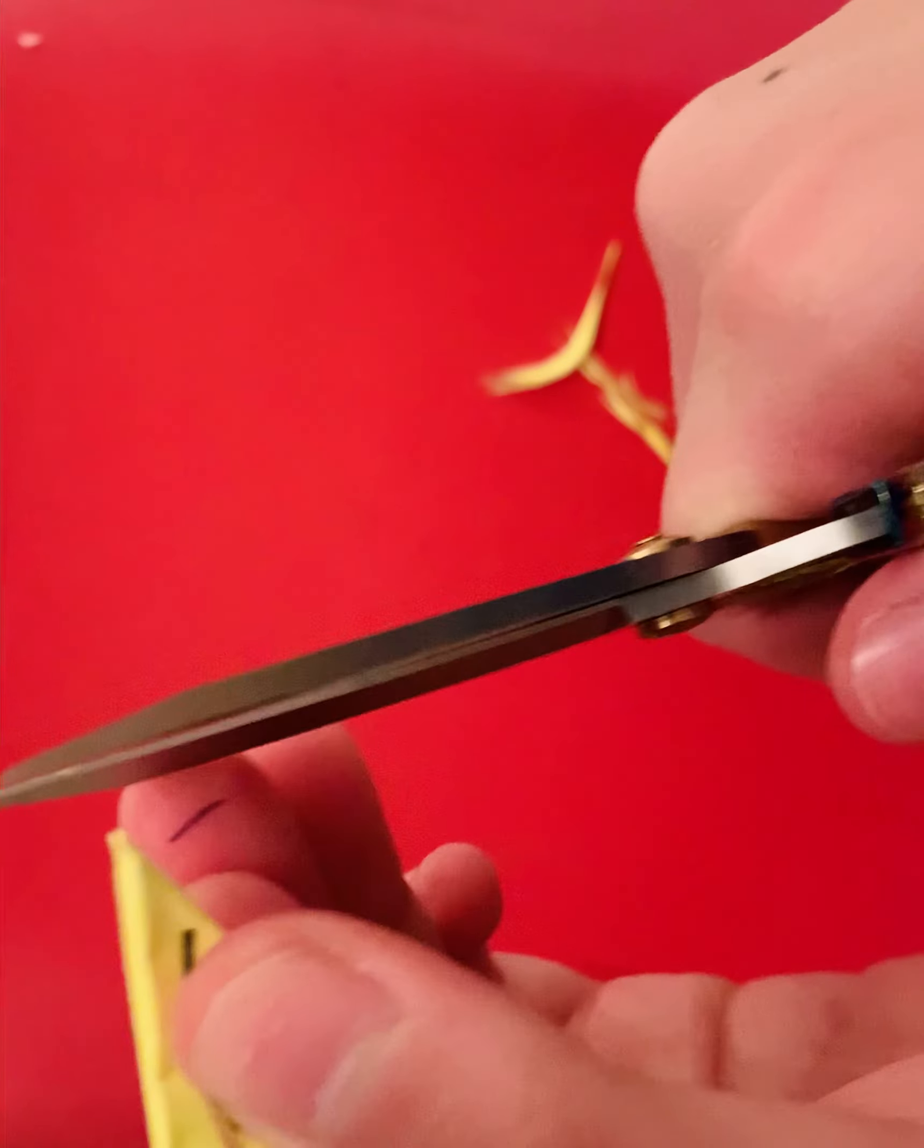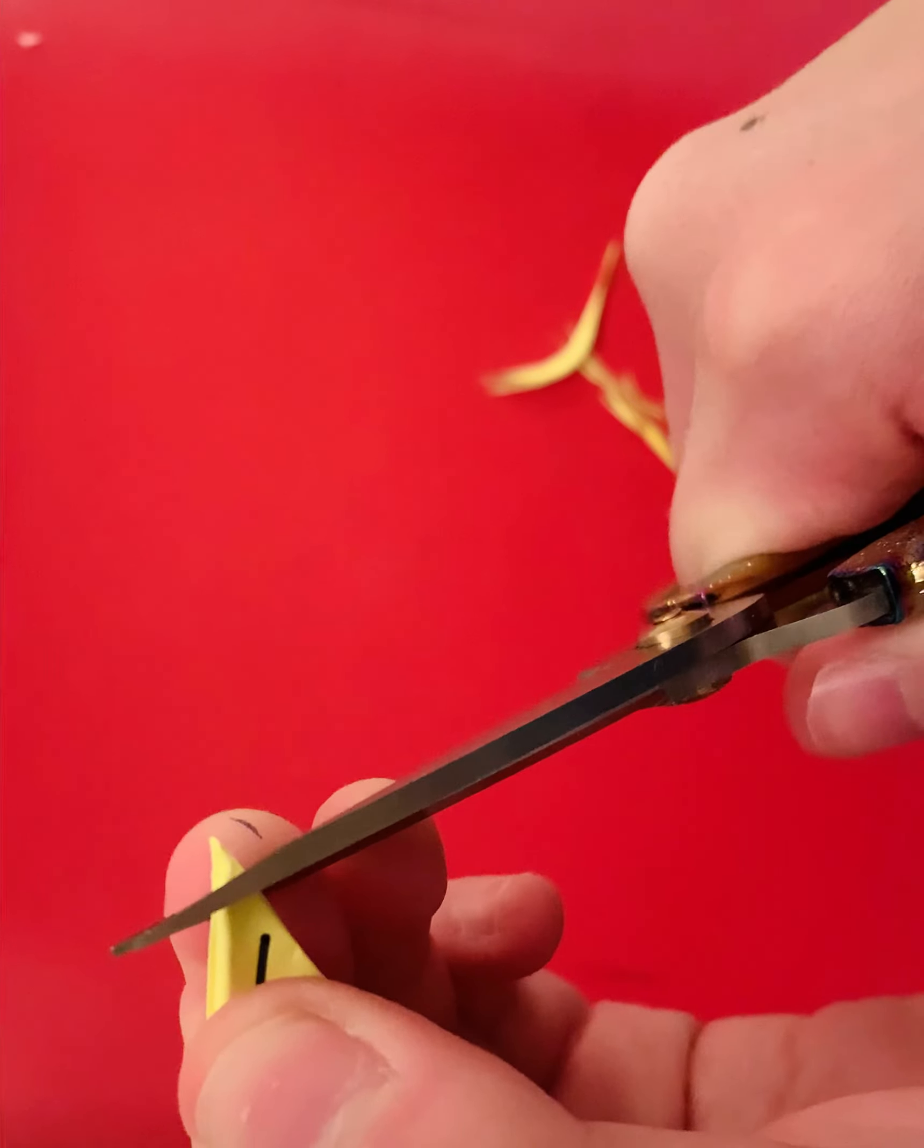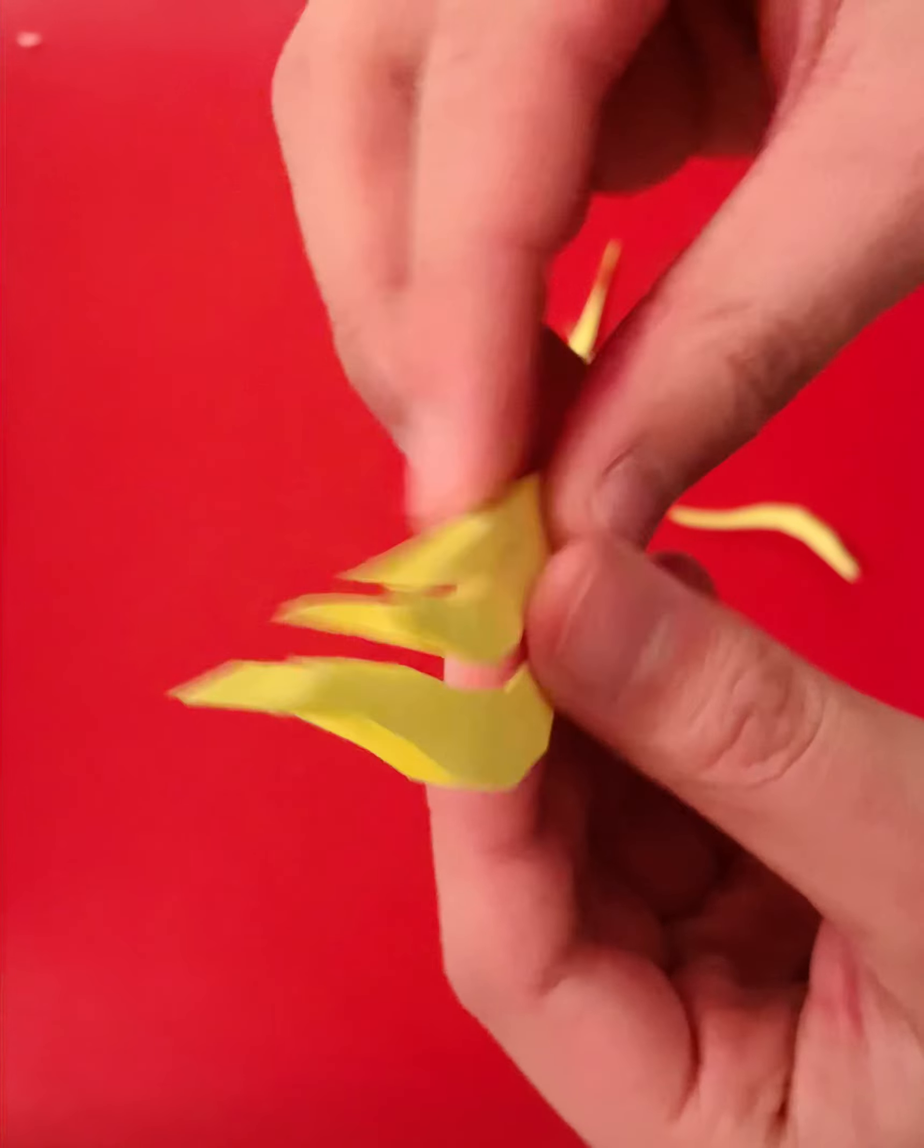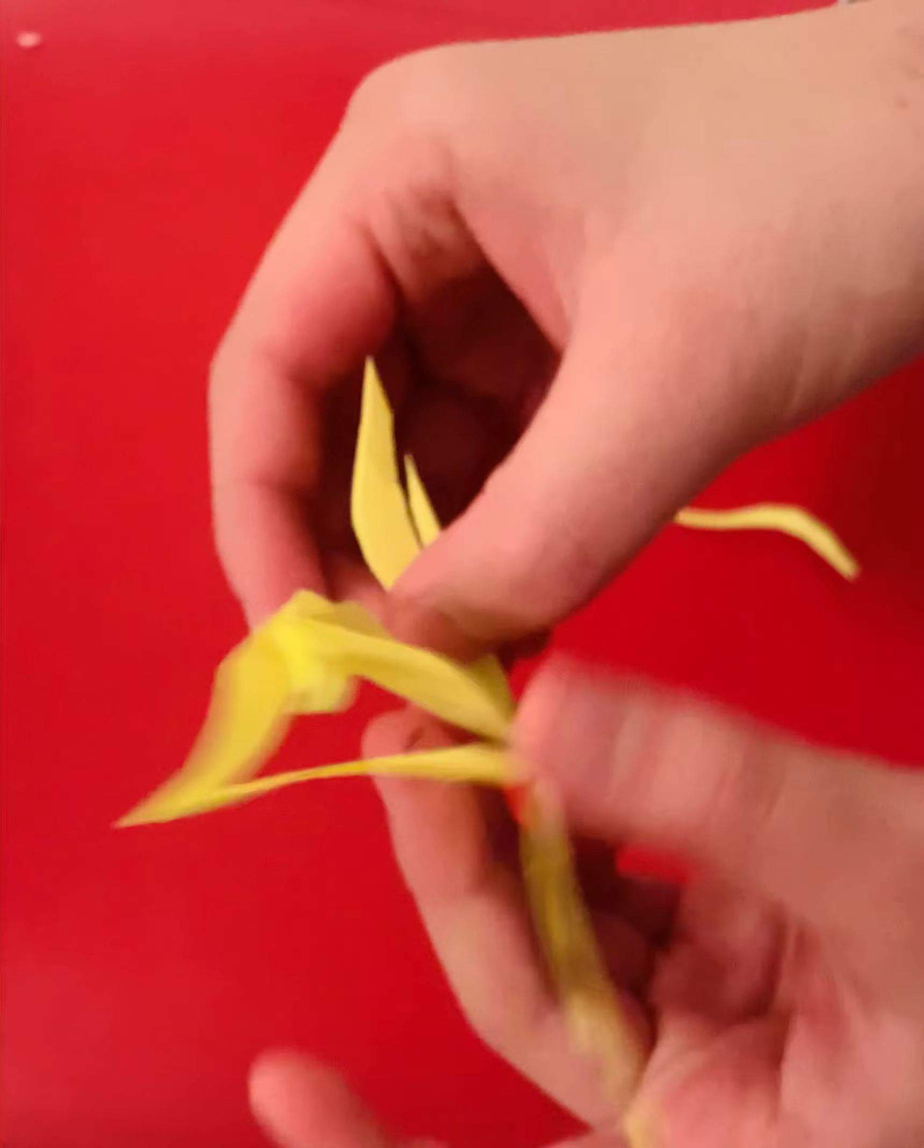So if you want to make that sort of center piece, we are going to take this part and we're just going to snip it off. And then there we go. We have a flower. I'm going to go ahead and open it up.